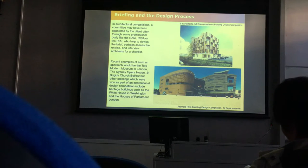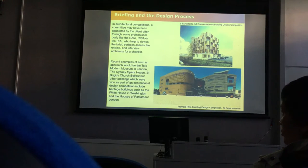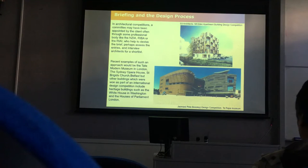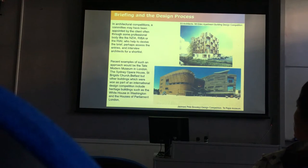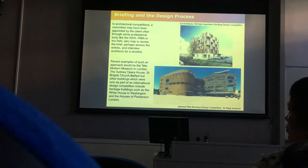A brief could be a list of rooms — sometimes called a schedule of accommodation — or it could include special factors relevant to certain buildings, such as cultural things. That church example: the architect wasn't religious at all, but he was able to read the document and see what was important to those people, and produce something suitable for their needs.